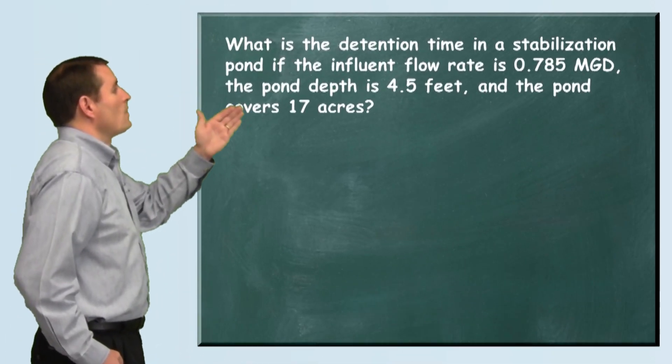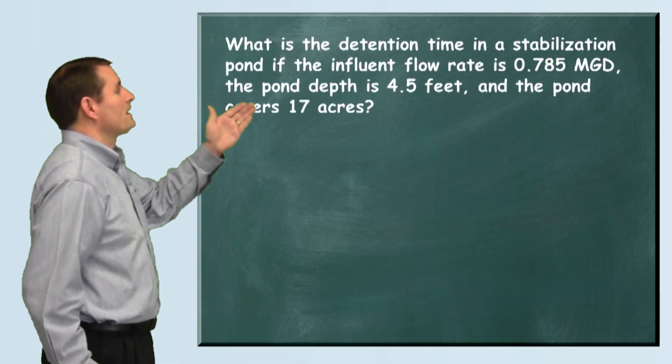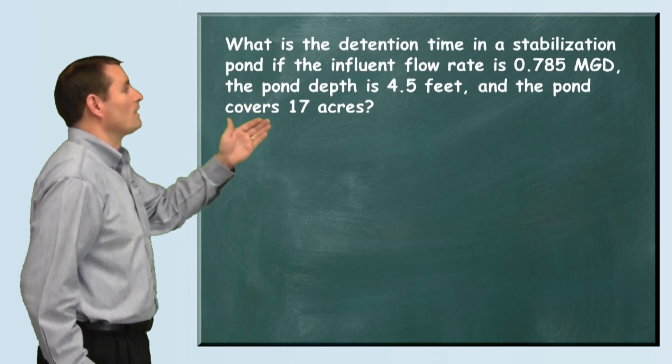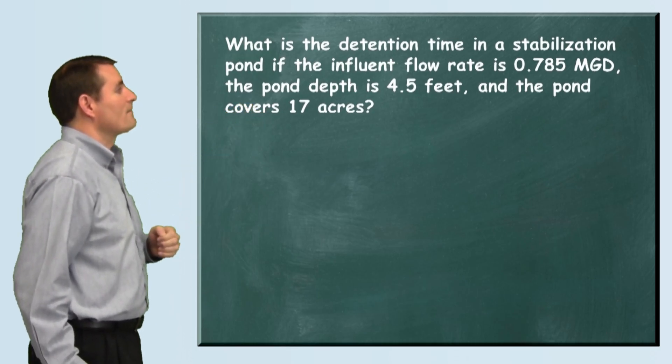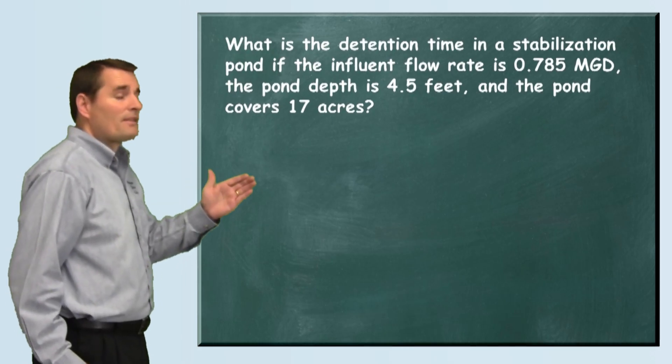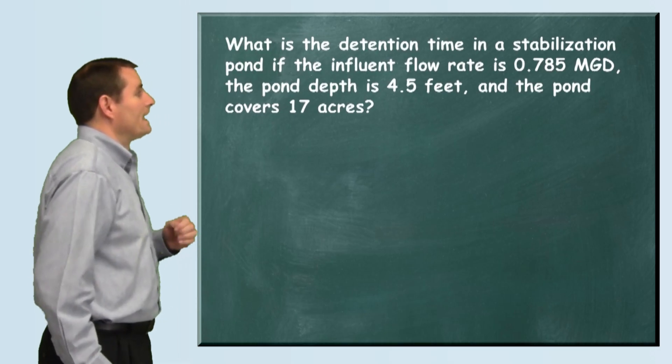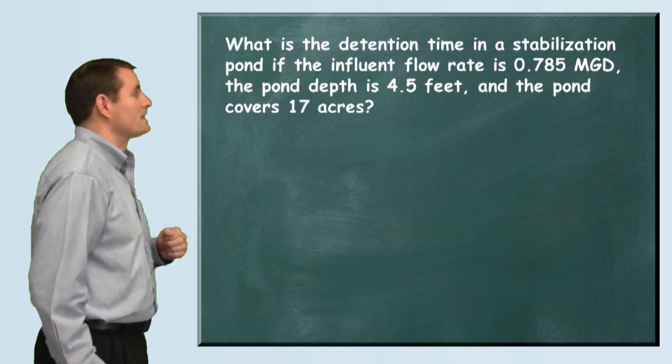The problem reads: what is the detention time in a stabilization pond if the influent flow rate is 0.785 million gallons per day, the pond depth is 4.5 feet, and the pond covers 17 acres?